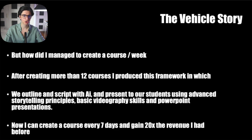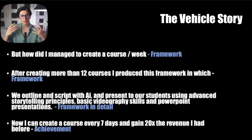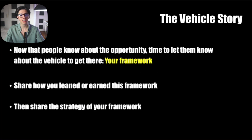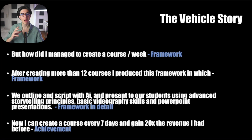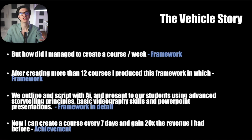Let's break down this vehicle story. How I managed to create one course a week is a transition between my origin story and my vehicle story. I present the fact that I managed to create a course a week, and then I ask how I did this — and this is where I introduce my vehicle, my framework. After creating more than 12 courses, I produced this framework. I reveal just the headlines of my process — I say I outline and script my courses with artificial intelligence, but I don't actually teach them in the introductory video what prompts to input in ChatGPT or CourseGPT. I give them the headline, but not the information.